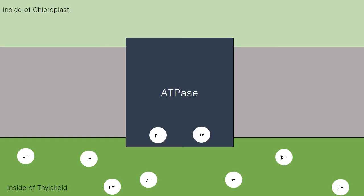During many of the previous steps, protons have been released into the inside of the thylakoid. The resulting concentration gradient allows for the formation of ATP.